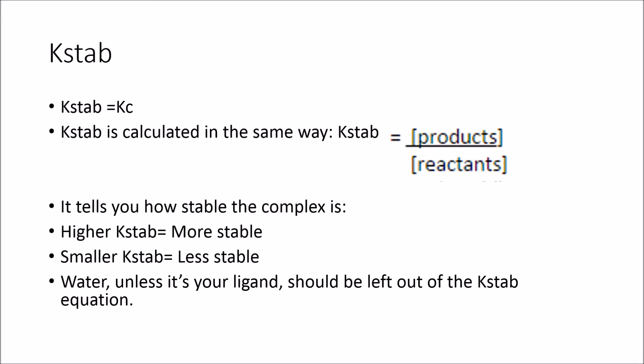So K-stab. K-stab is basically equal to Kc. It's just applied in a circumstance where you have a central metal ion and you have this complex form. So you can deduce the strength of that complex. You calculate it in the same way as you would calculate Kc, which is basically your concentration of your products over your concentration of reactants. It tells you how stable the complex is. A higher K-stab means you're going to have more products to fewer reactants, so it's going to be more stable. A smaller K-stab means you're going to have more reactants to fewer products, which means you're going to have a less stable complex.